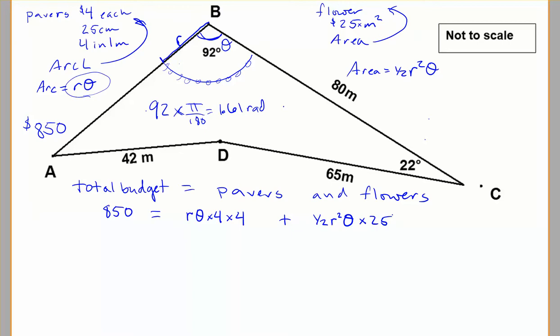So what I can work out here, if I simplify this a little bit, is I've got $850 total to spend. 4 times 4 is 16. So I've got 16r theta plus 1/2 of 25 is 12.5 r² theta. If I can figure out some value of r that will work for this, then I'm in good shape.